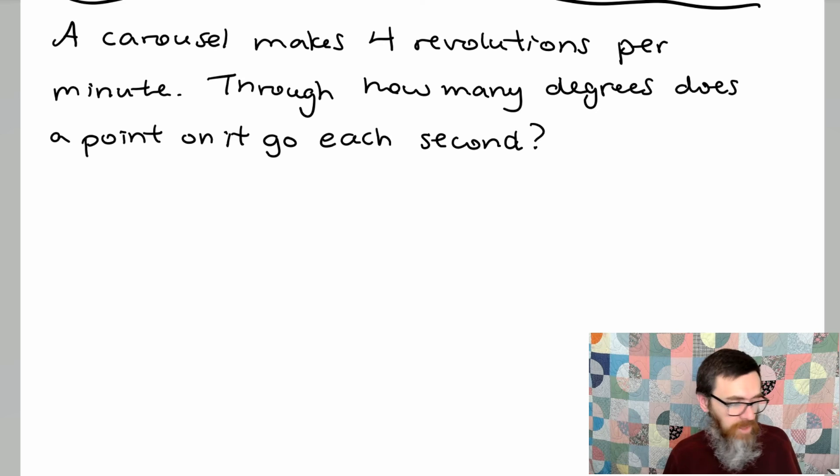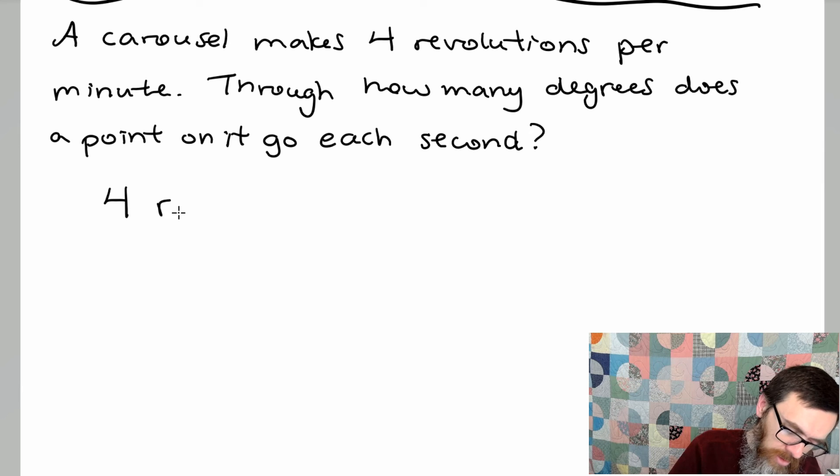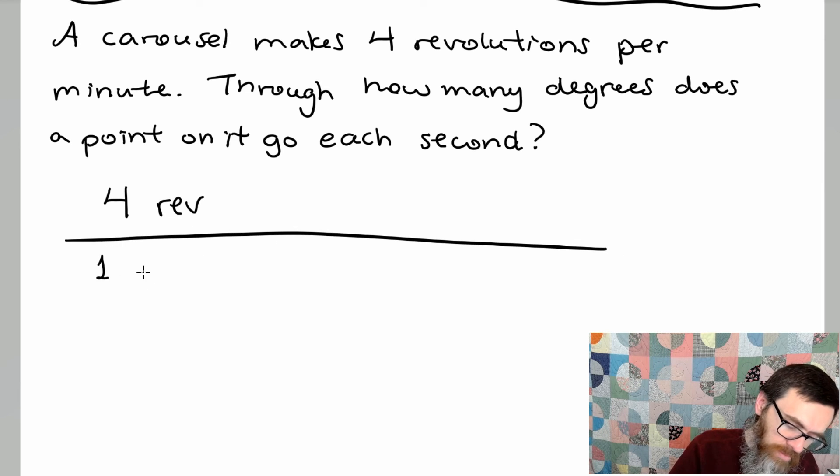In our last problem we have a carousel and it makes 4 revolutions per minute. Through how many degrees does a point on it go each second? Imagine we've got a point on a carousel. Now this carousel is making 4 revolutions per minute but we want to know how many degrees is that point going through in terms of rotating each second. So let's start with what we're given. We have 4 revolutions per minute.